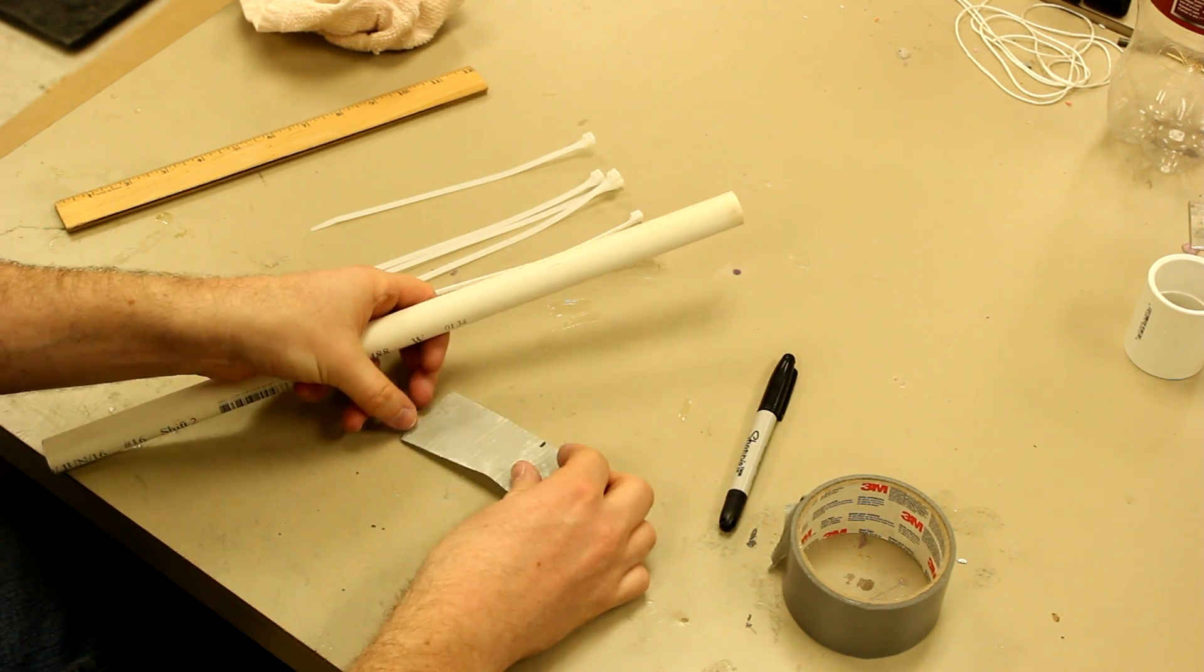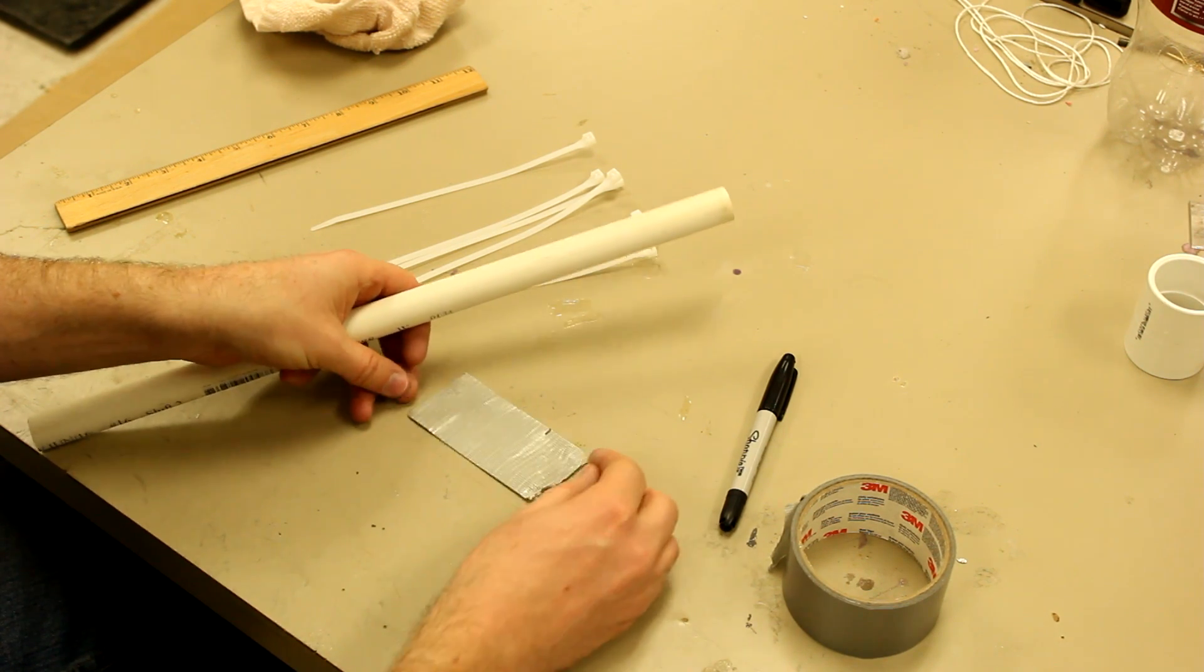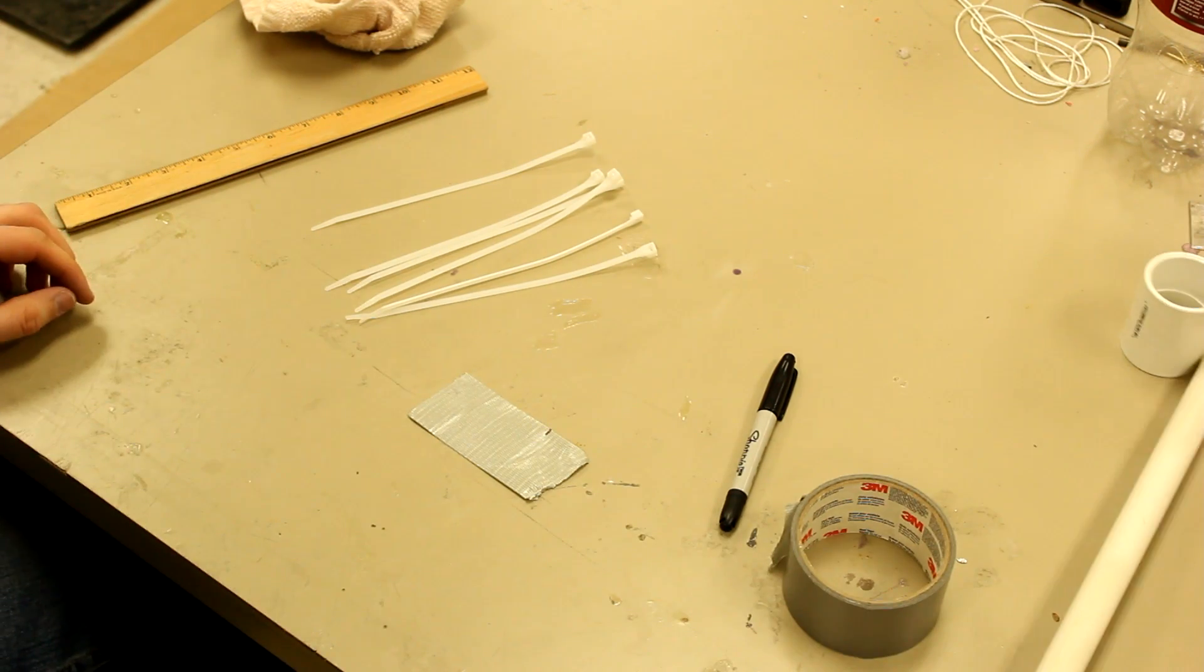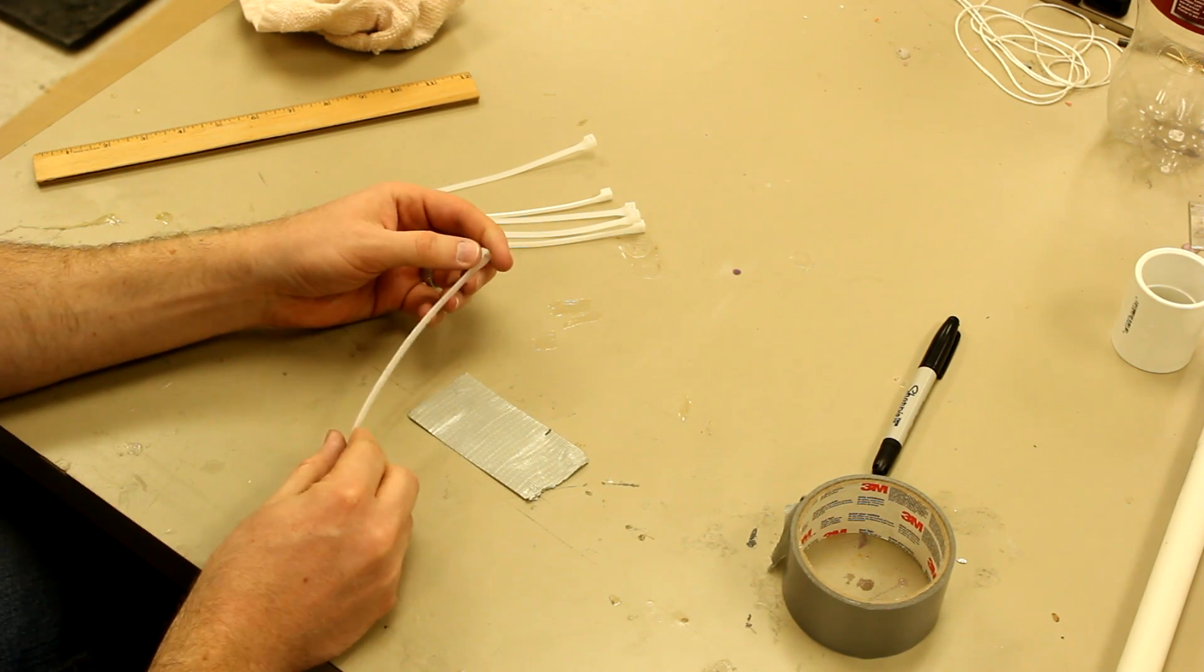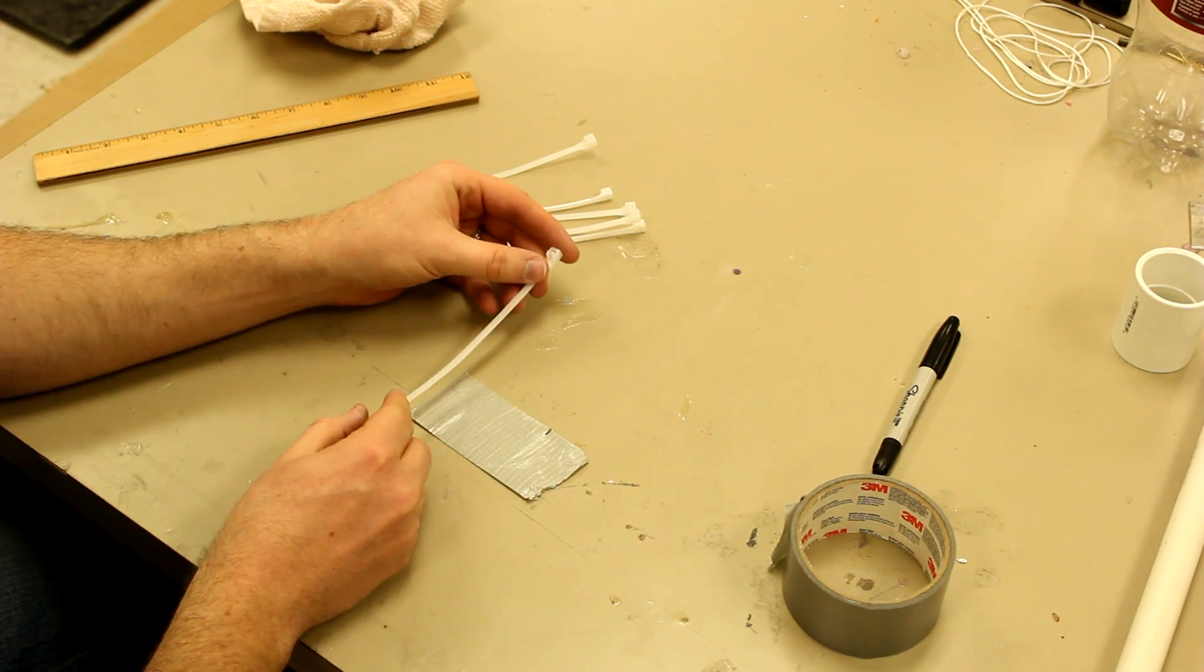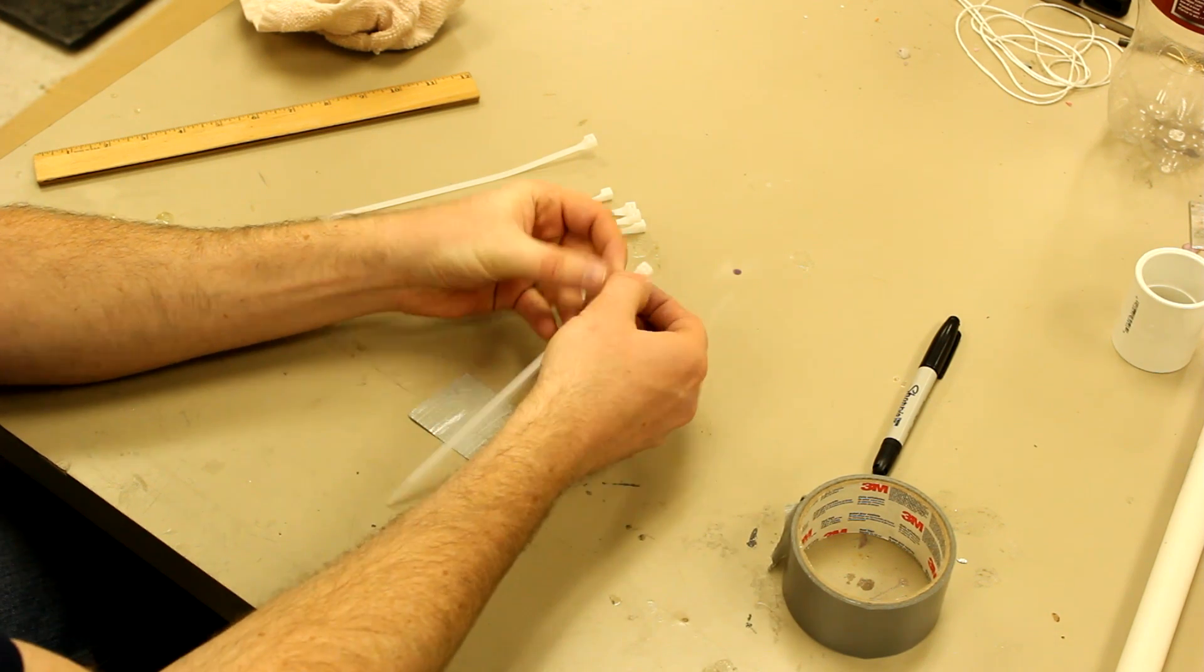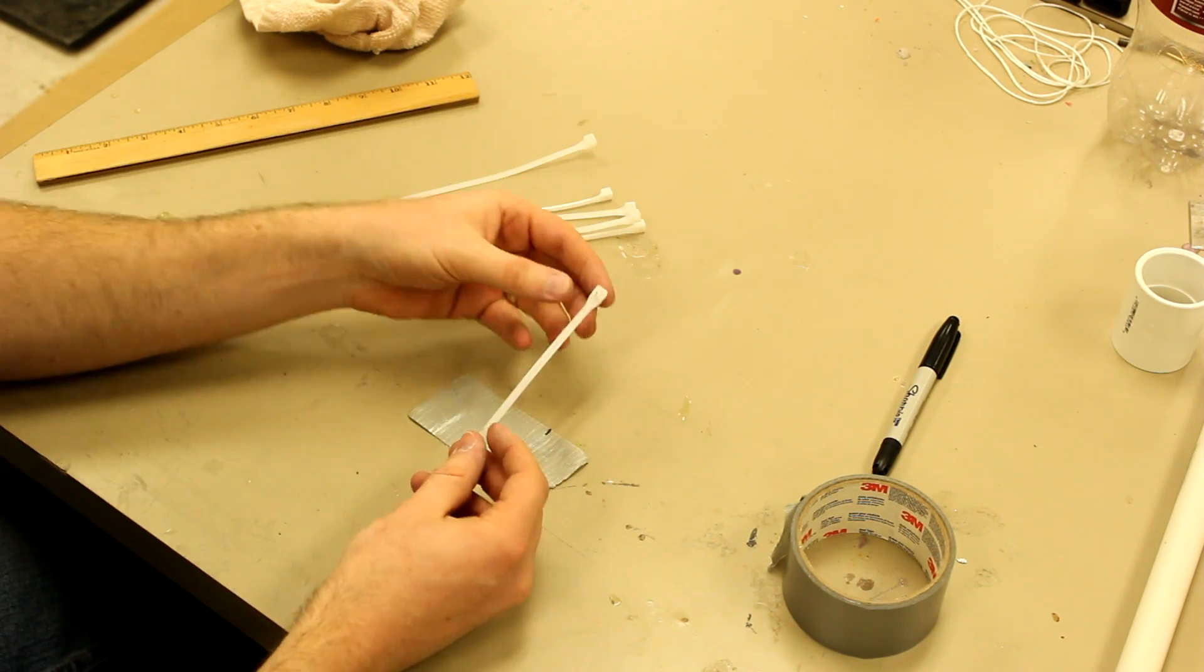And that's our reference for the circumference of the pipe. Then we'll set that aside. And what we want to do is use these zip ties. And we're going to lay them with the large end facing up from the table.